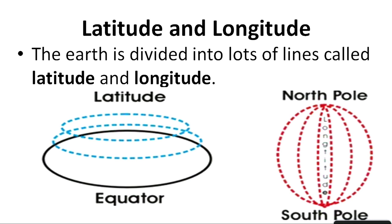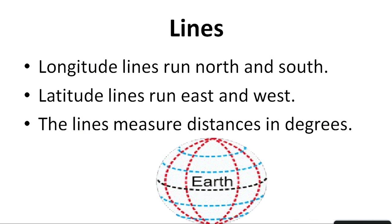In the same manner, if we talk about longitudes — these are also imaginary lines which join the North Pole with the South Pole. They do not make a perfect circle; instead they make a semicircle. Longitude lines run parallel north and south whereas latitude lines run east and west. The lines measure distance in degrees. If you see this is the equator, whereas the red line depicted here is a longitude.